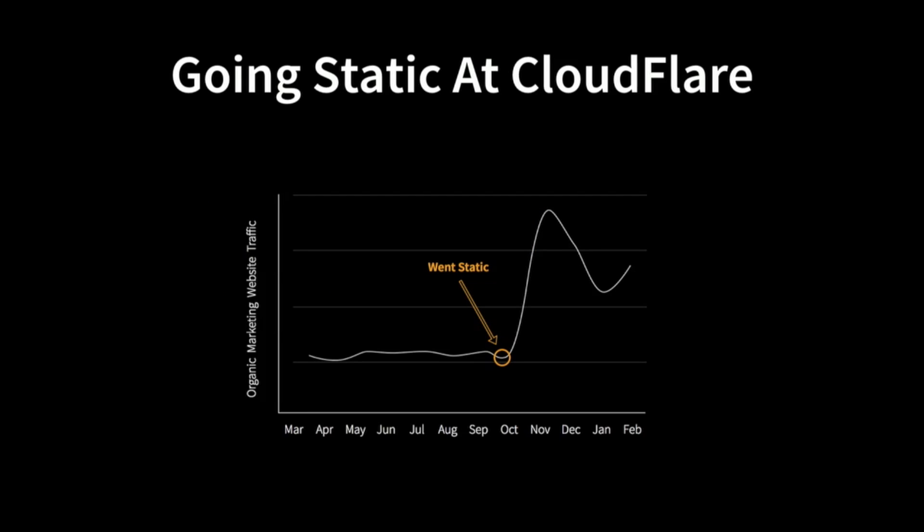Immediately after we went static, our marketing metrics improved dramatically. Now obviously, this spike in organic traffic isn't just due to having a static website, but it did allow our velocity of change to explode. So instead of publishing once a week, we could publish whenever we wanted — we started pushing a ton of content, doing A/B tests, and creating dedicated landing pages for marketing campaigns.